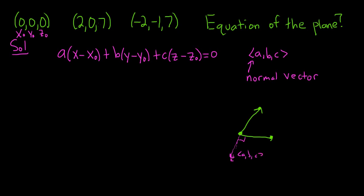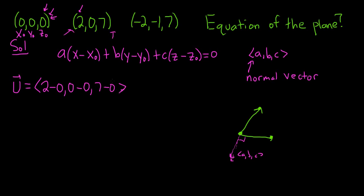Step one is to form two vectors on the plane using the terminal minus initial formula. To find the first vector U, let's use two of the points: the second point is the terminal point and the first point is the initial. Subtracting the components: two minus zero, zero minus zero, and seven minus zero. So vector U is (2, 0, 7).